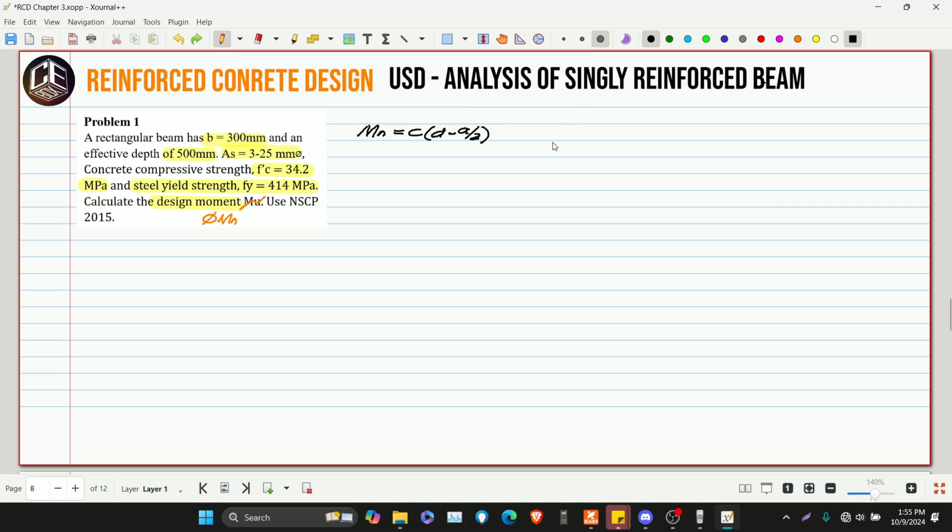So, this is applicable. Bakit? Kasi, rectangular beam yung meron tayo. Or, equivalent to T multiplied by D minus A over 2. So, kailangan natin ma-solve yung A. So, paano nga ba natin ma-solve yun? Gamit ang equilibrium condition.